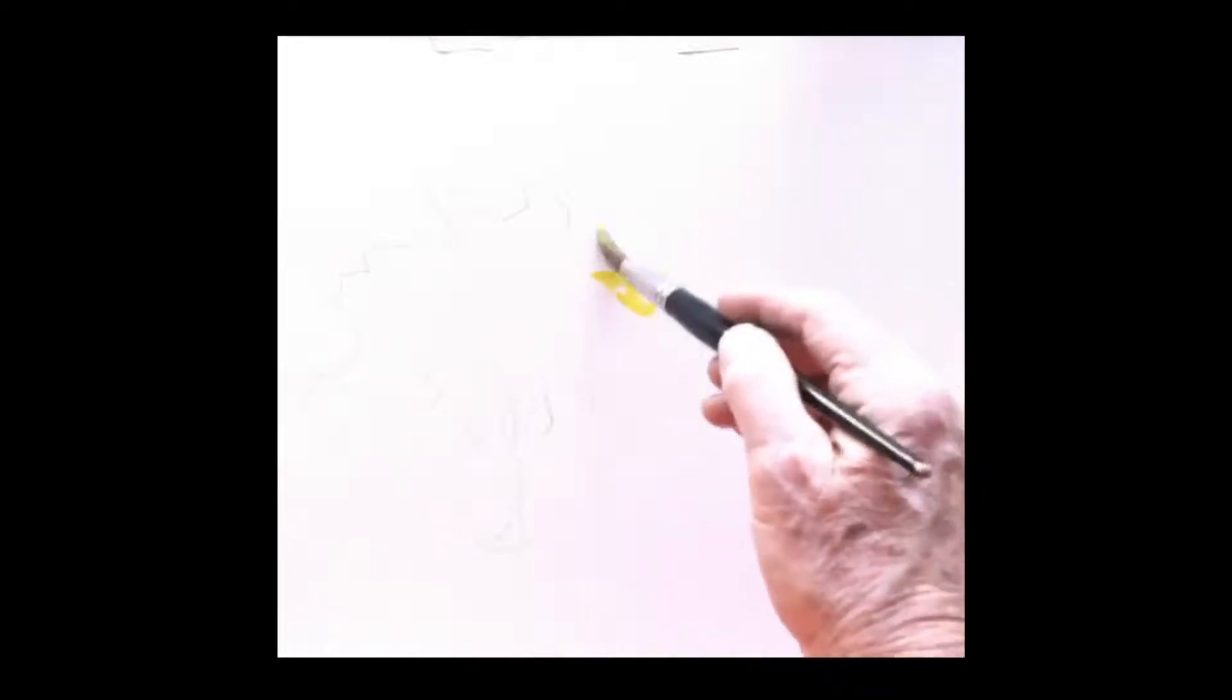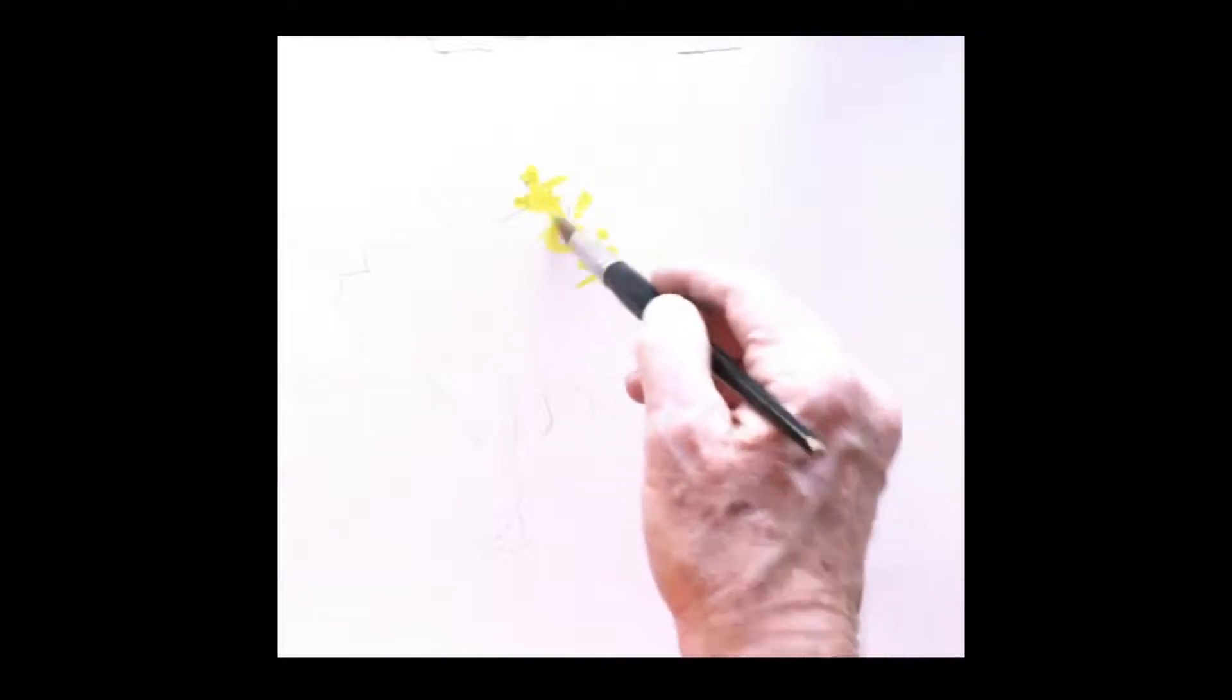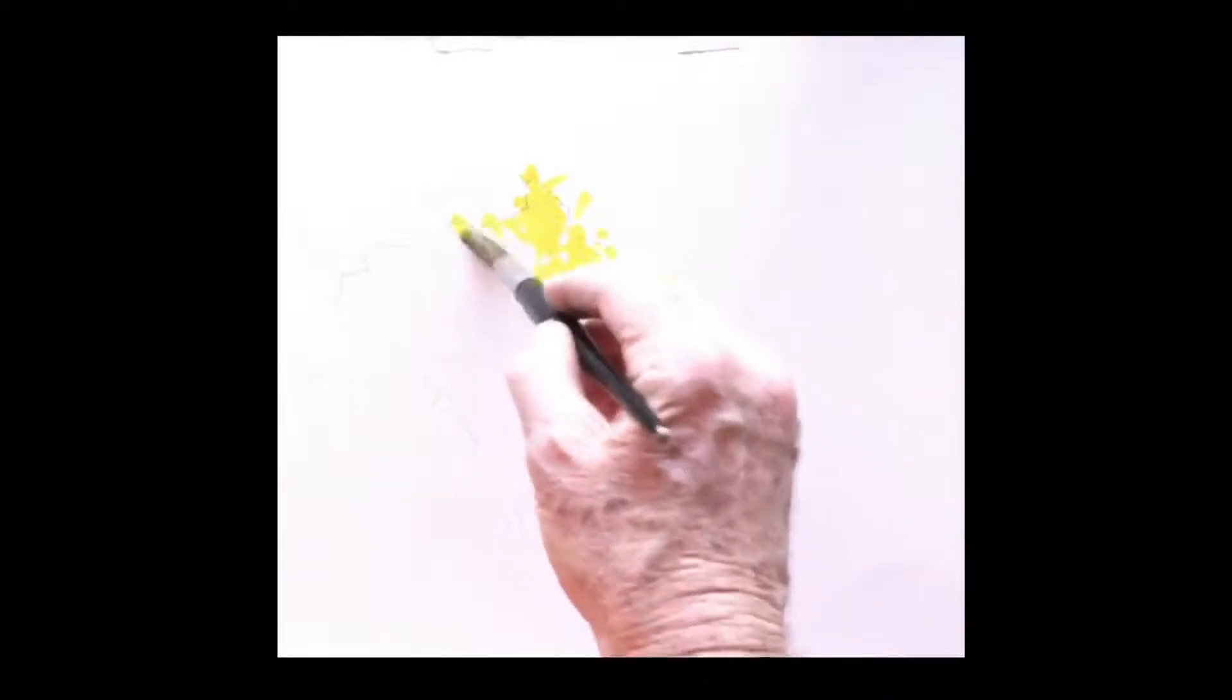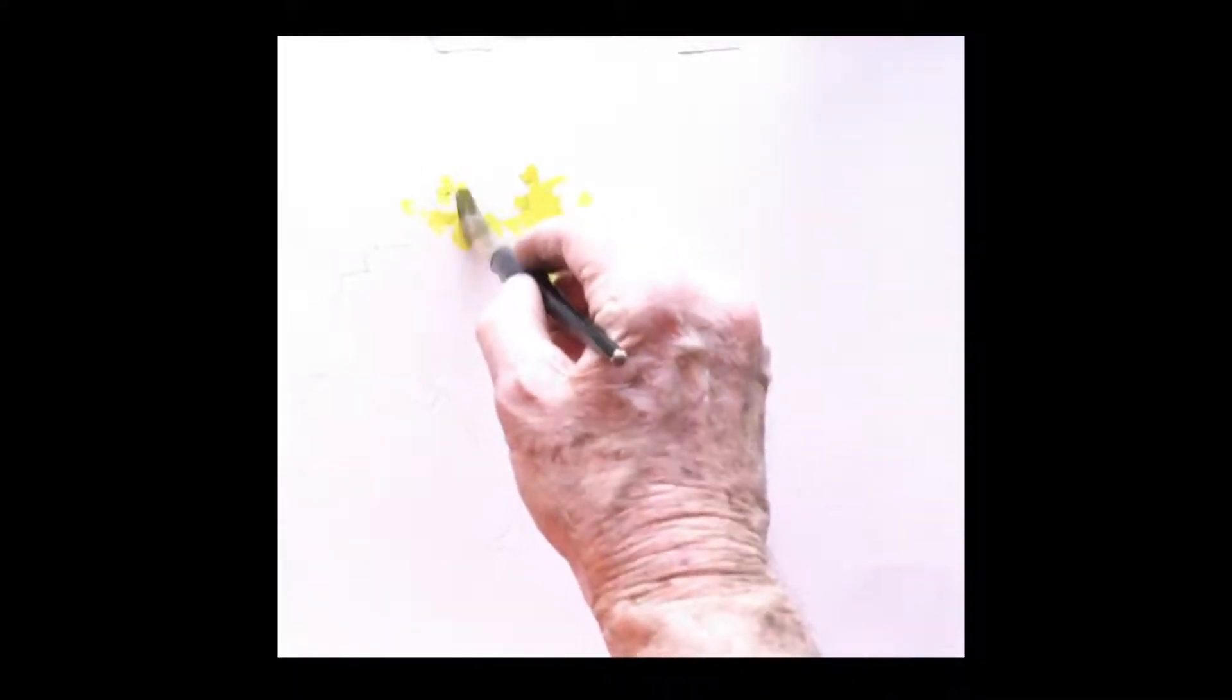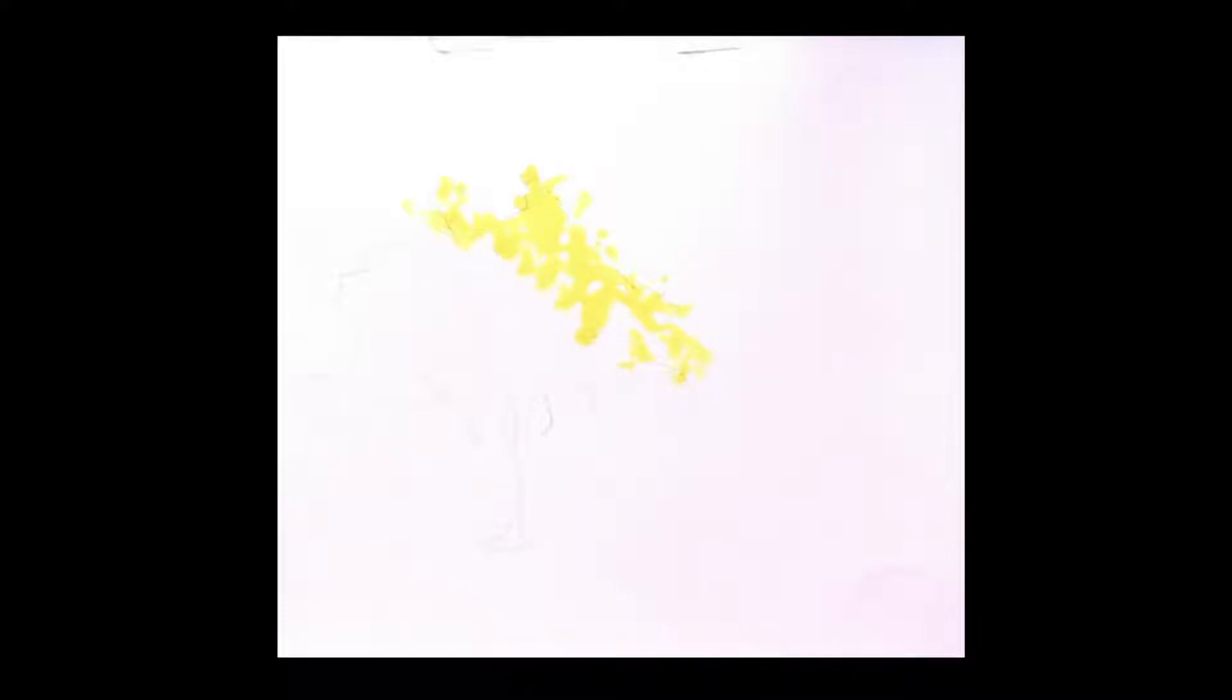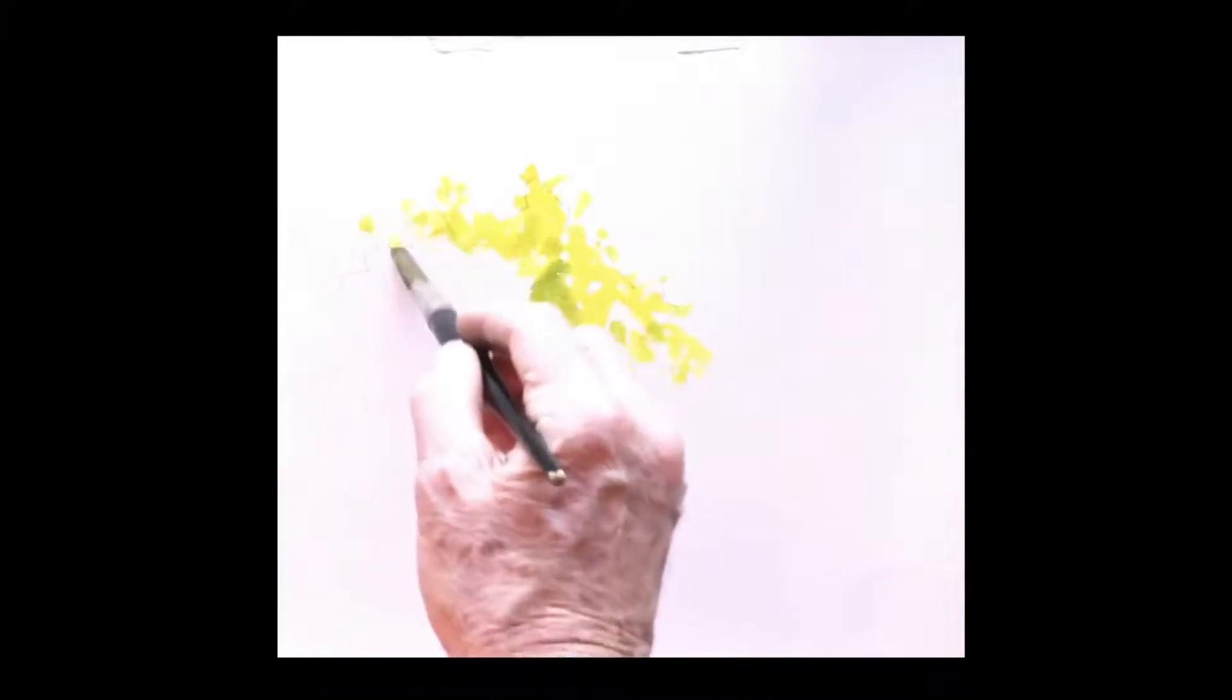And I'm using my number 16 sable brush to paint the sunny side of the tree. We're going to work our way gradually across, trying to get an edge that looks like leaves across from the sunny side to the shady side and from the top, which is lighter value because it's facing the sun. I'm starting to add a little bit of my green mixture here, but very light.